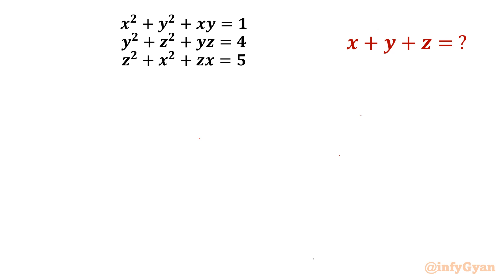Welcome back to InfiGyan friends. Today in this video we are going to simplify one system of equations for the expression x plus y plus z. The equations are: x squared plus y squared plus xy equals 1, y squared plus z squared plus yz equals 4, and z squared plus x squared plus zx equals 5.